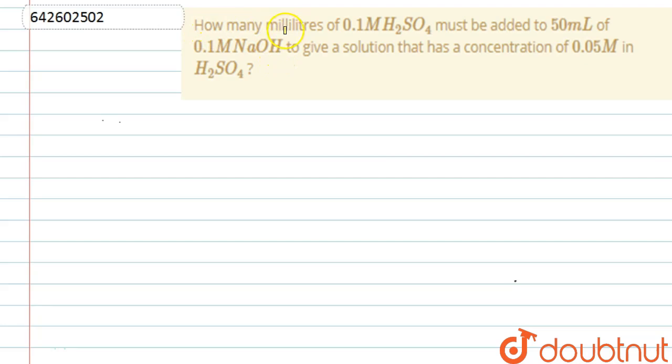What the question says: how many milliliters of 0.1 molar H2SO4 must be added to 50 ml of 0.1 molar NaOH to give a solution that has concentration of 0.05 molar H2SO4? Now we are given a reaction.